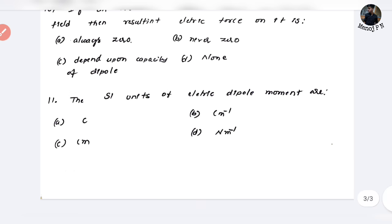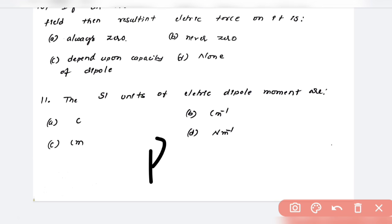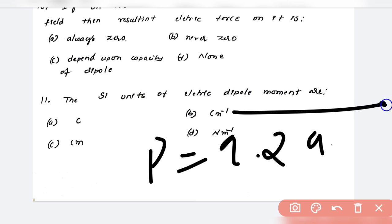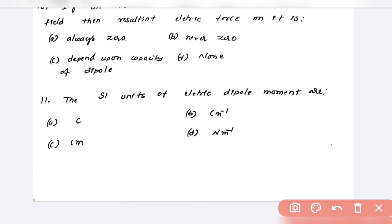Next: the SI unit of the electric dipole moment. The basic formula is p equals q times 2a. So the SI unit is coulombs times meters. Option C is your answer. In this chapter, build your basic and fundamental questions and keep on learning. Thanks for watching.